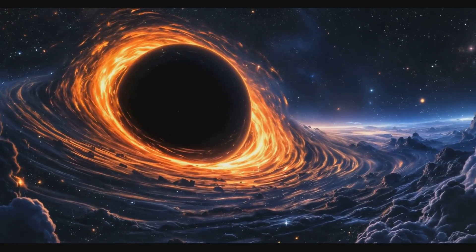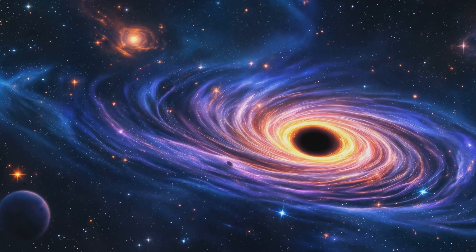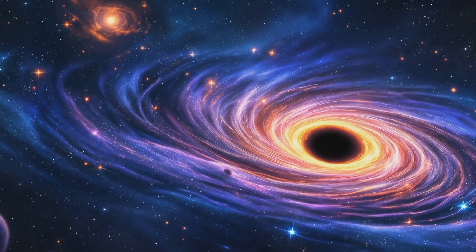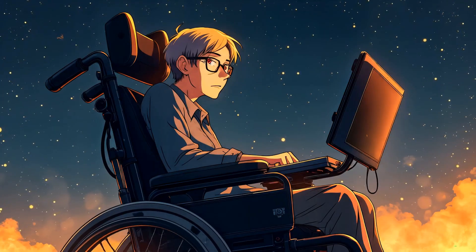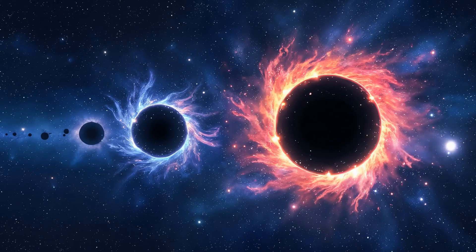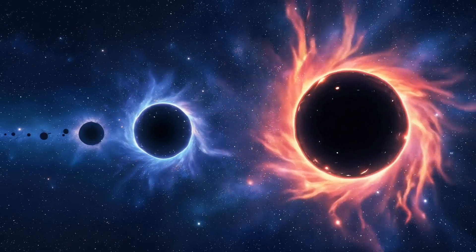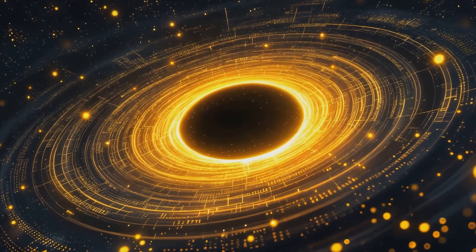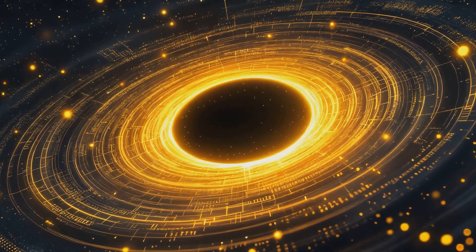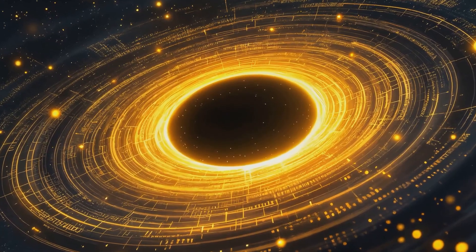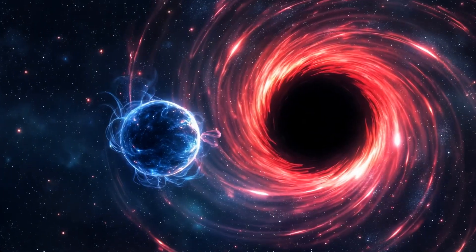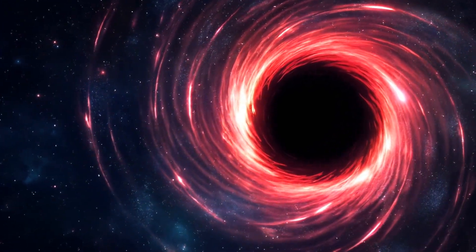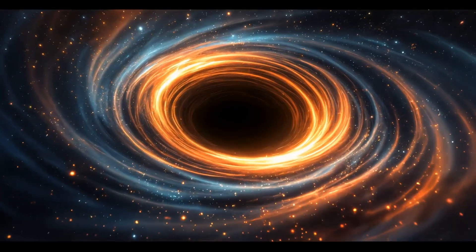Black holes, regions where gravity is so intense not even light can escape. For decades they were seen as the ultimate cosmic dead ends, swallowing anything that crossed their event horizon. But Stephen Hawking changed that view. In the 1970s, he proposed something revolutionary. Black holes aren't entirely black. They emit radiation, now known as Hawking radiation. Here's how it works. Even in a vacuum, quantum mechanics tells us that particles and antiparticles constantly appear and vanish. Near a black hole's event horizon these pairs can be split. One falls in, the other escapes as radiation. Over time, this causes the black hole to lose mass and eventually, evaporate.